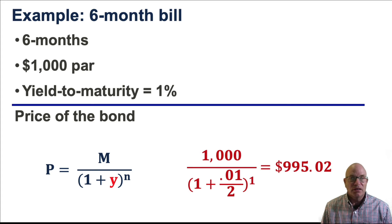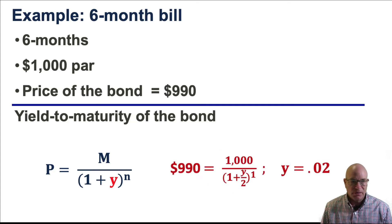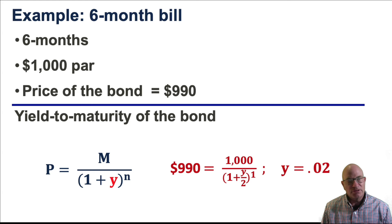Let's do another example — still a six-month bond. Now we're going to give you the price, which is equal to $990. We work it the opposite way: we can find the yield to maturity. And in this case, it is 2%.